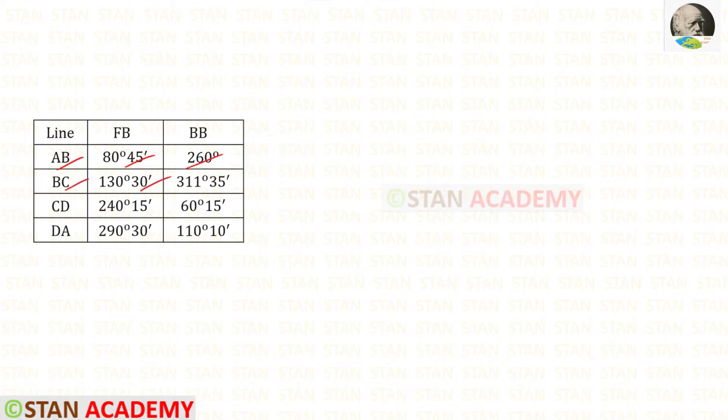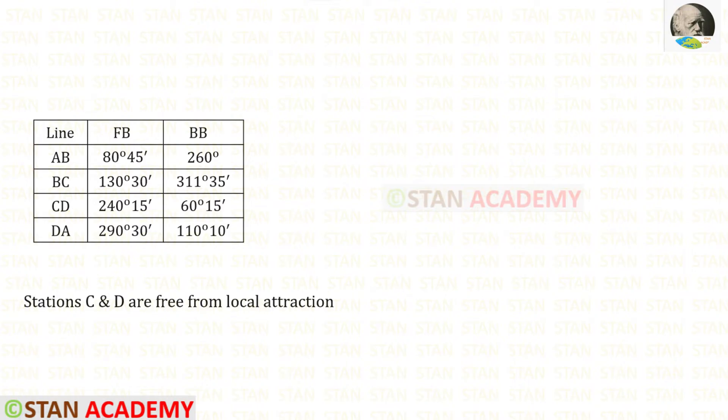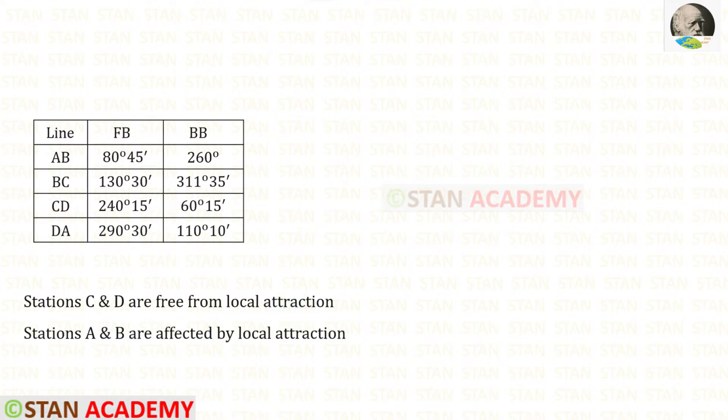Now we are going to check which stations are affected by local attraction. We know that the difference between the forebearing and backbearing should be 180 degrees. In AB the difference will not be 180 degrees. In BC also it won't be equal to 180 degrees. In CD the difference between these two will be exactly 180 degrees. And finally in DA the difference will not be equal to 180 degrees. So only in CD the difference is 180 degrees, and we can assume that stations C and D are free from local attraction. The rest of the stations, A and B, are affected by local attraction.